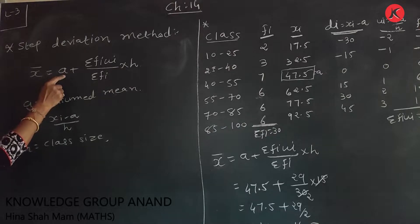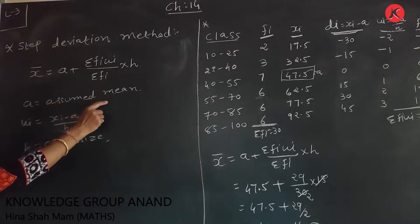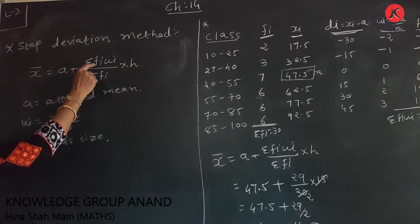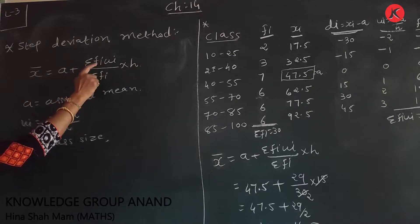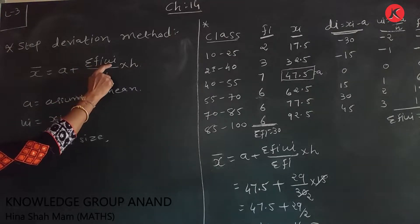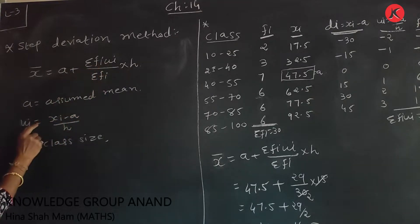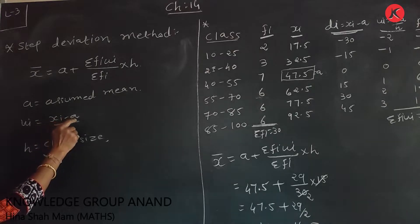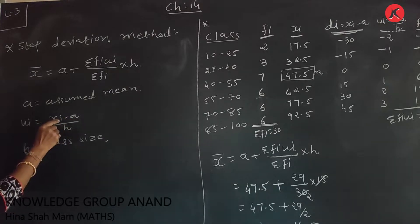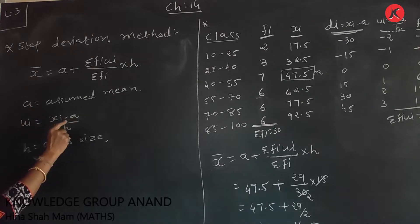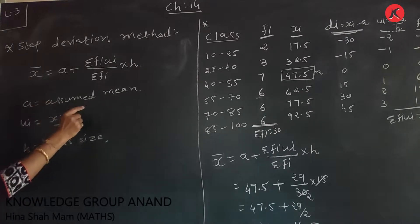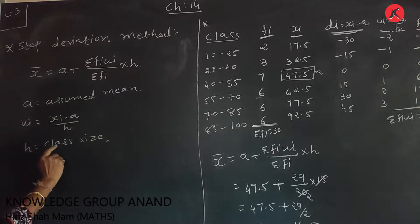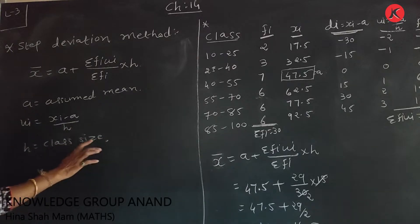Where a is the assumed mean, fi is our frequency, and ui = (xi - a) / h. Here xi means class mark, a means assumed mean, and h is our class size.